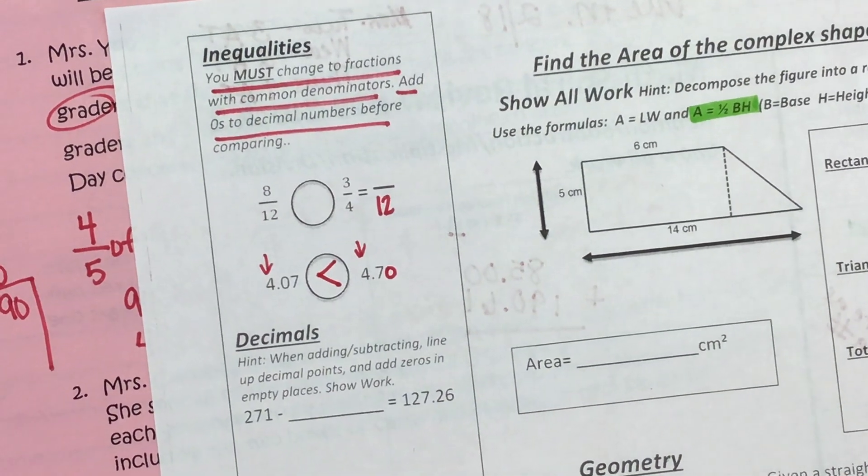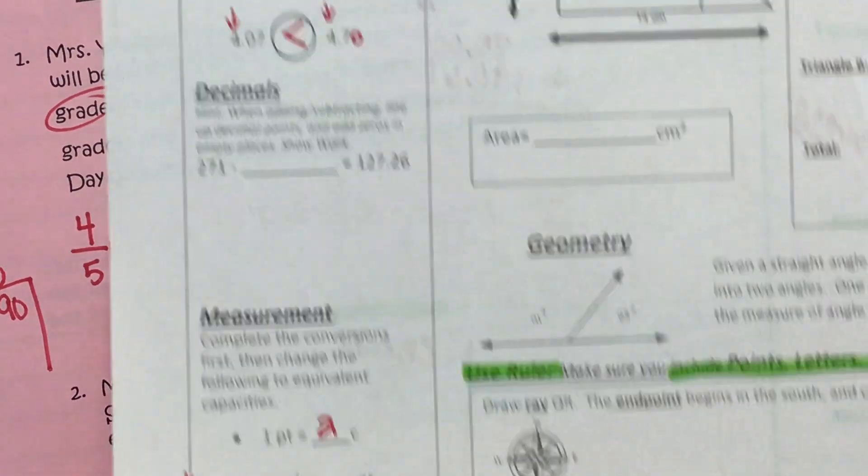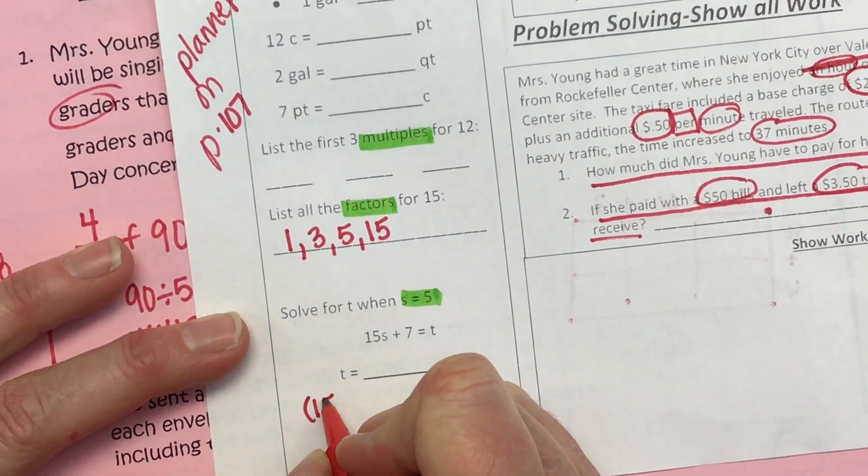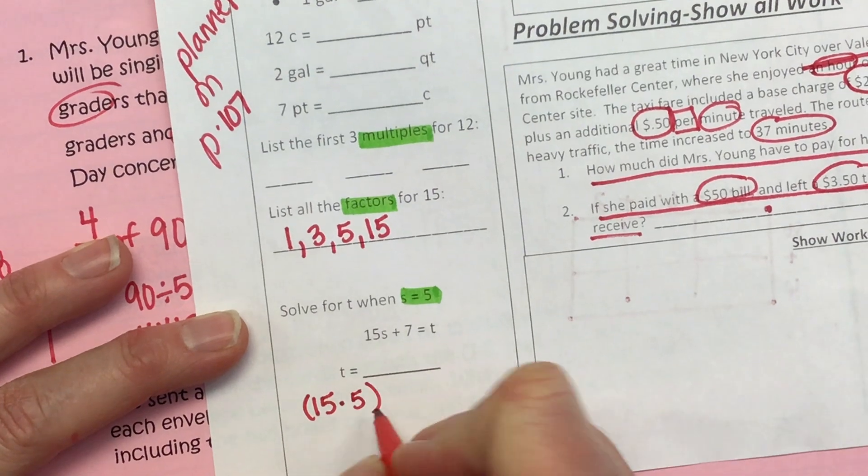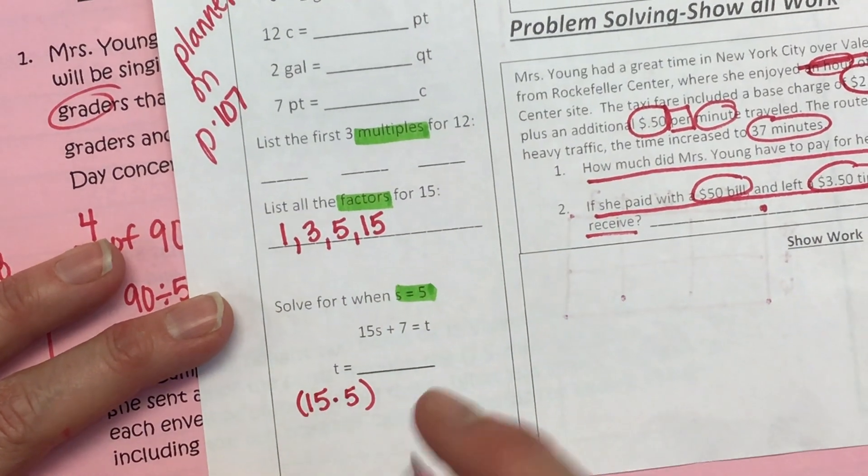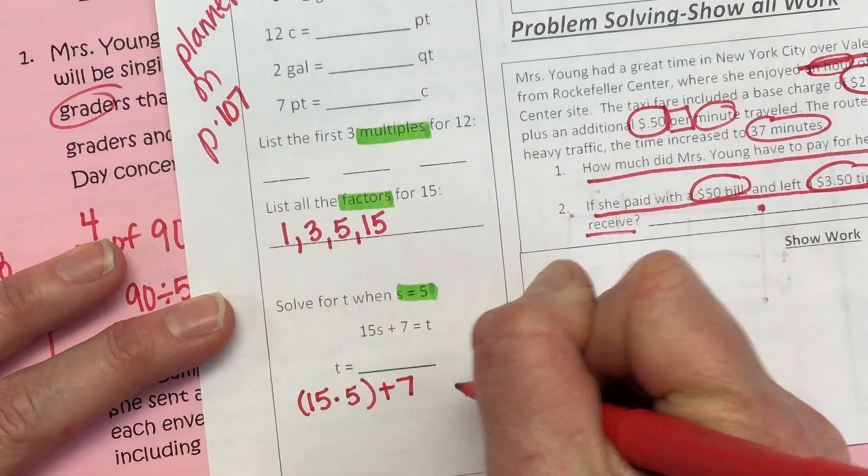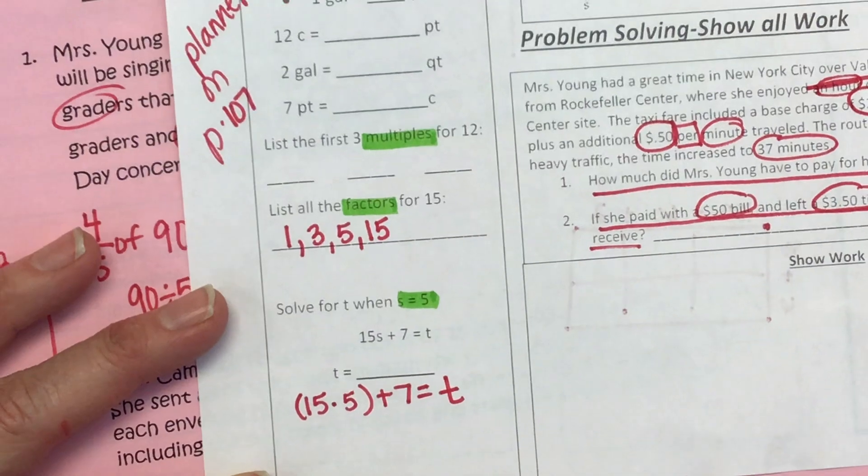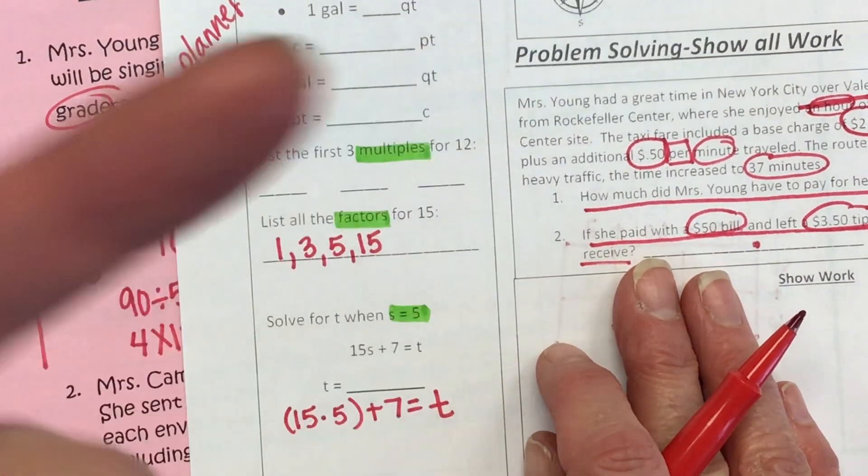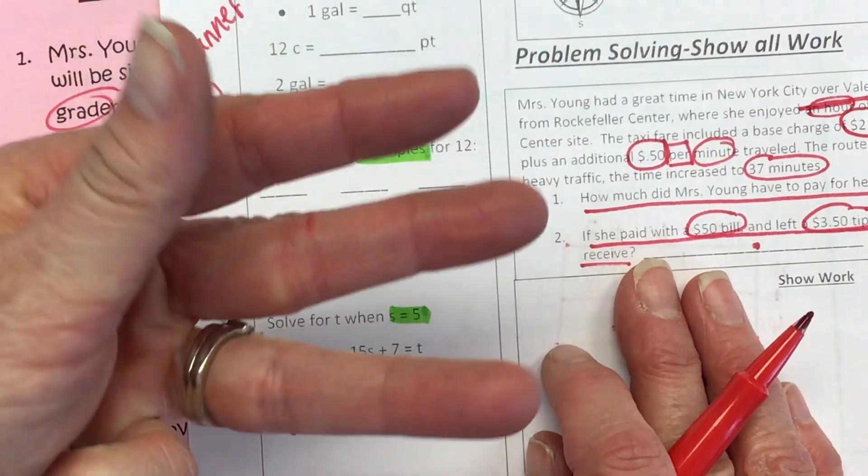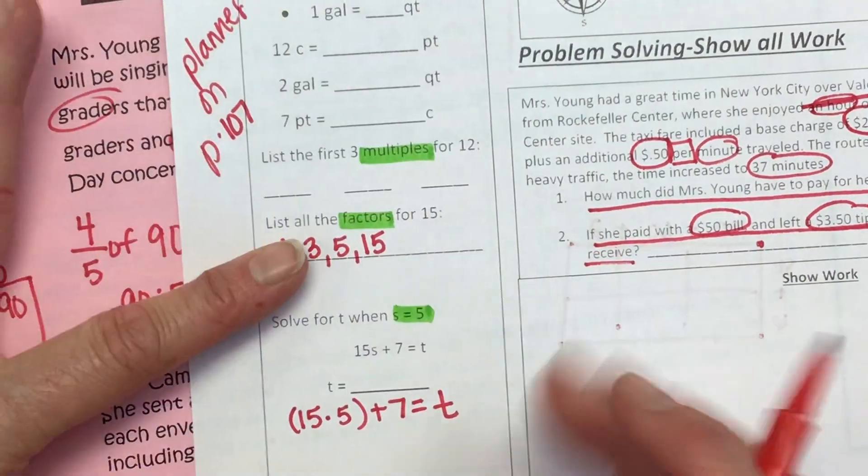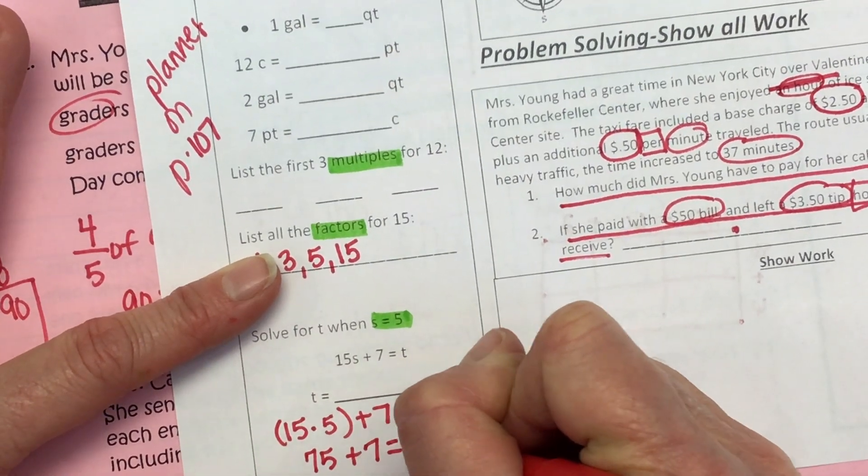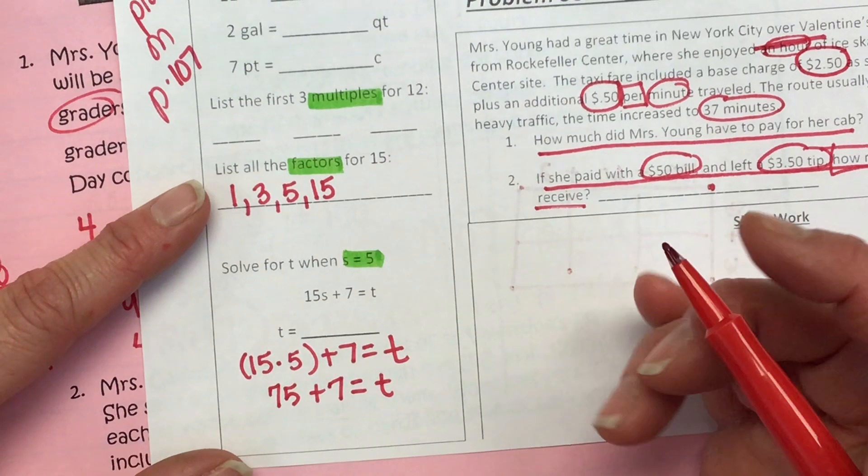So if s is five, then that needs to be 15 times five. Remember we talked about that dot meaning times. And then we add seven and that equals T. So what is 15 times five? Can we count it out? 15, 30, 45, 60, 75. So 75 plus seven equals T. So what is T? 82.